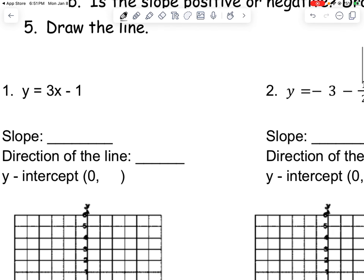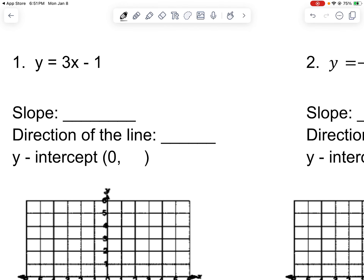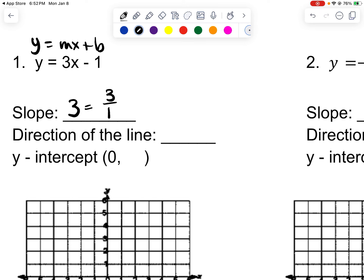We're going to find the slope, first things first. Remember, y equals mx plus b. So the slope is 3, and in fractional form, that would be 3 over 1. That's the change in y, or rise, over the change in x — and that means you're going to run. The direction of the line is going to be a positive slope, so it is going to go in this direction.